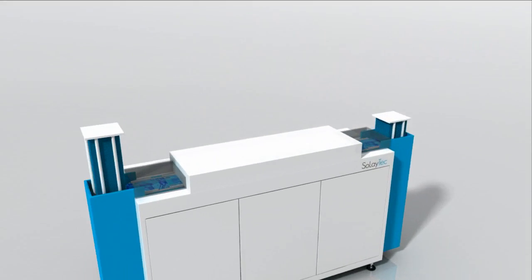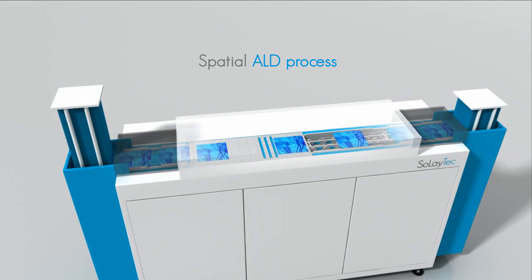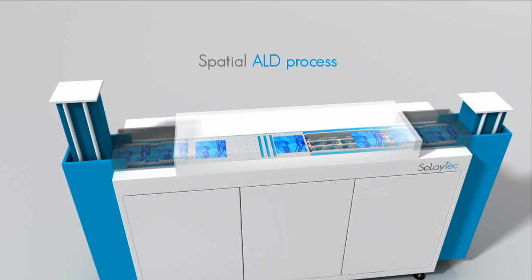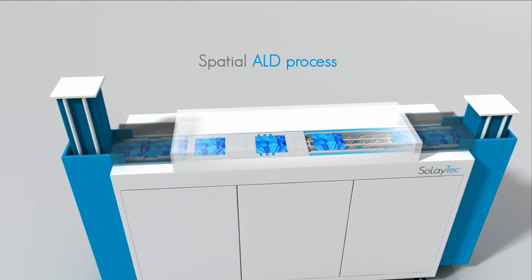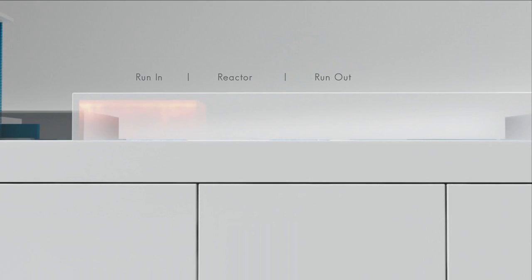The substrates enter the process development tool by manual feed or wafer cassettes. Wafers are transported through the system by the double floating principle to avoid any mechanical contact. The wafers are heated to process temperature and precisely leveled before entering the ALD module.